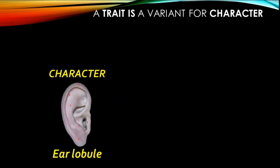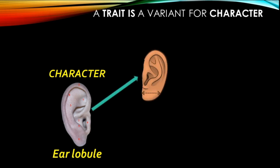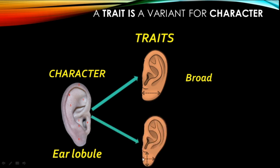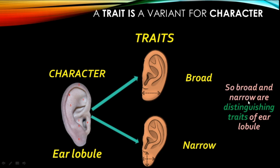Now come to another example: the character ear lobule. Look at the ear lobule in the first picture — it is broader, so 'broad ear lobule' is one trait. Now look at the next: the ear lobule is narrow. So broad and narrow are the traits for the character ear lobule. Broad ear lobule and narrow ear lobule are the contrasting or distinguishing traits for the character ear lobule. I hope you understand the difference between trait and character.